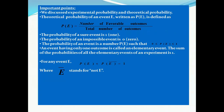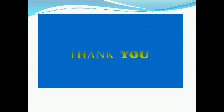We have discussed experimental probability and theoretical probability. Theoretical probability is represented as P(E) = number of favorable outcomes by total number of outcomes. The probability of a sure event will always be 1, and the probability of an impossible event will always be 0. The probability of any event P(E) always lies between 0 and 1. An event having only one outcome is called an elementary event, and the sum of probabilities of all elementary events of an experiment is 1. For any event, P(E) + P(E-bar) = 1, where E-bar stands for the complement of E. Thank you, hope you have understood the topic well.